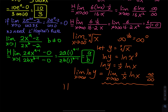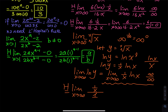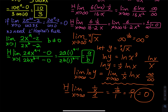Applying L'Hôpital's rule: the derivative of ln(x) is 1 over x, and the derivative of x is 1. This gives the limit as x approaches infinity of (1 over x) divided by 1. Remember, L'Hôpital's rule means taking the derivative of the numerator and the derivative of the denominator separately — this is not the quotient rule. Plugging in infinity: 1 over infinity is 0, divided by 1 equals 0. However, this is not the final answer because we have ln(y) equals 0, not y itself.